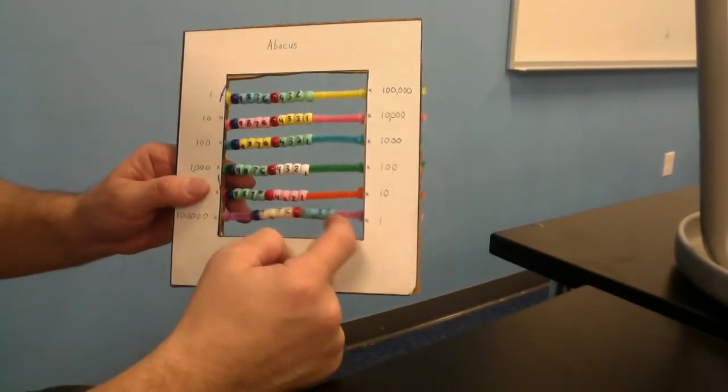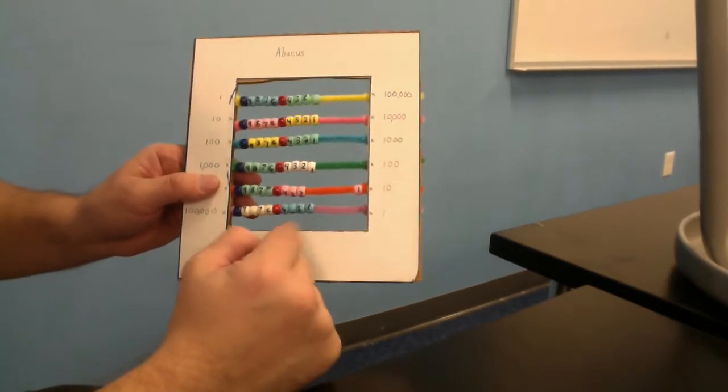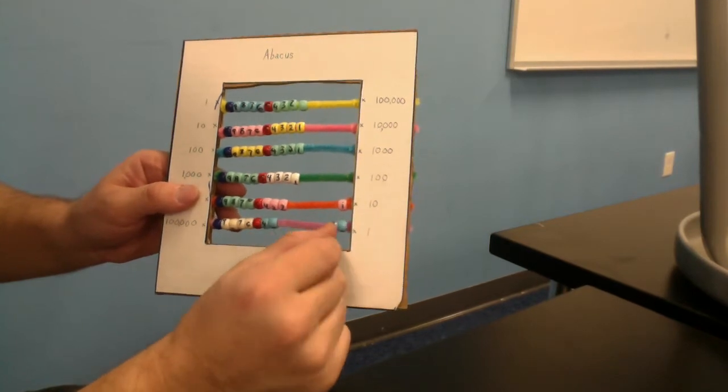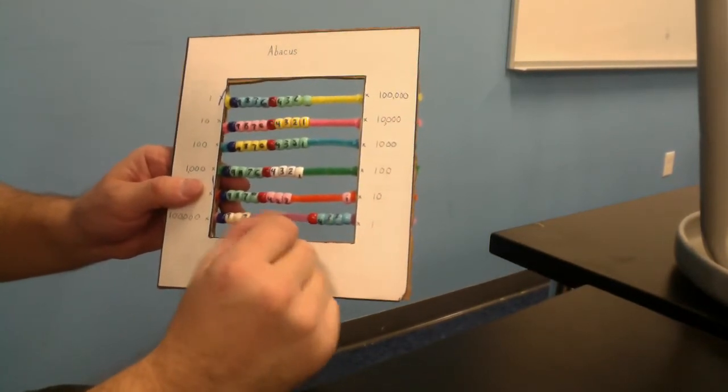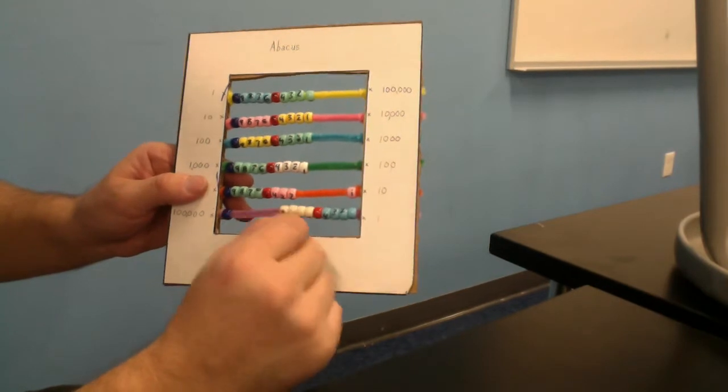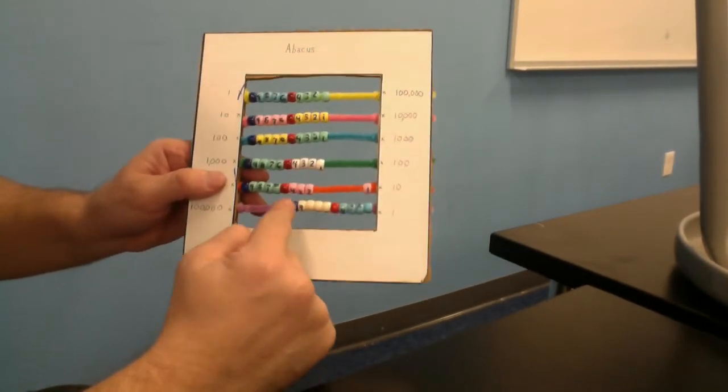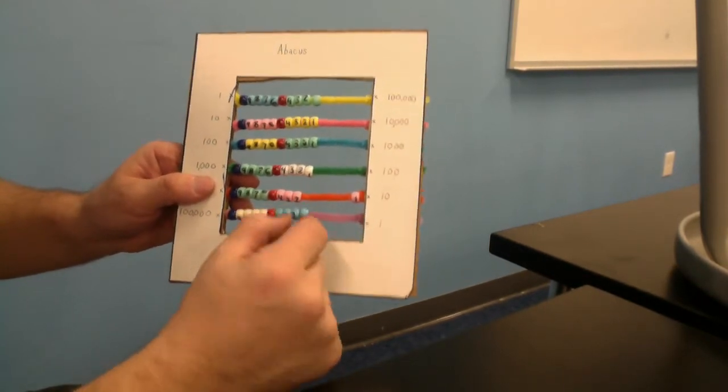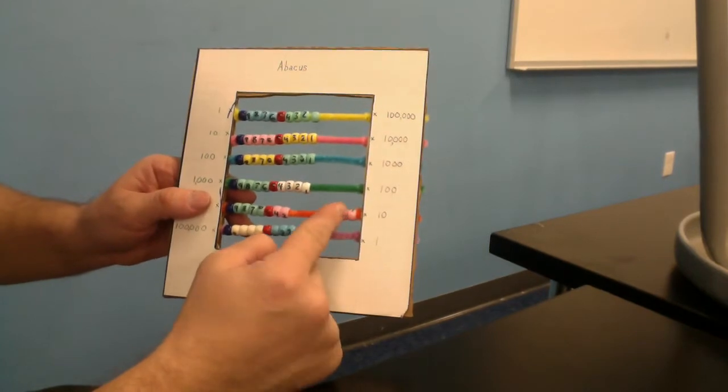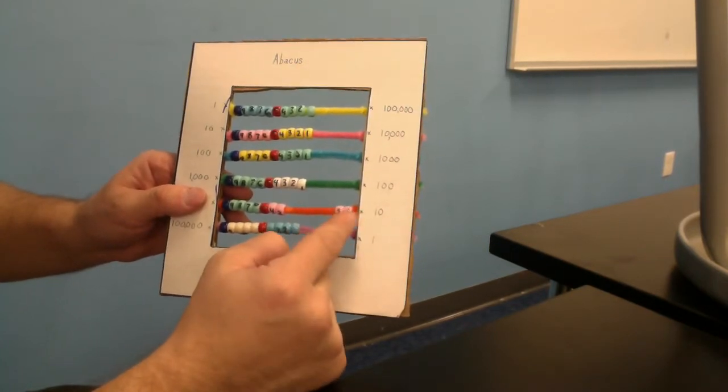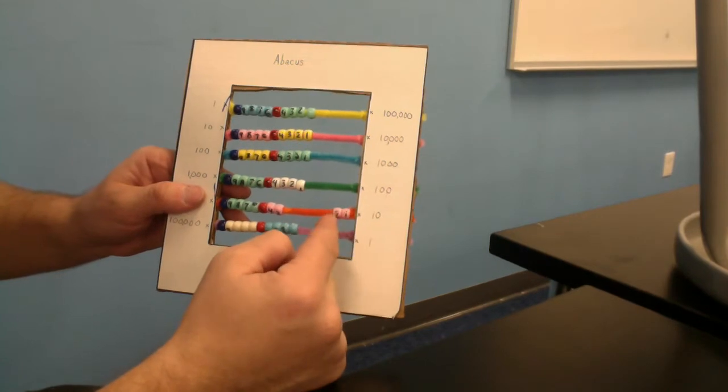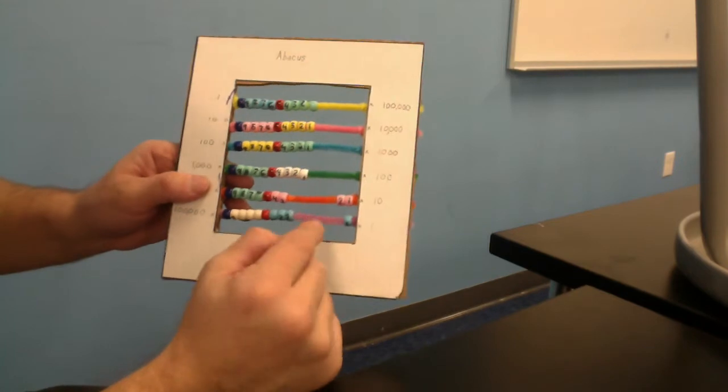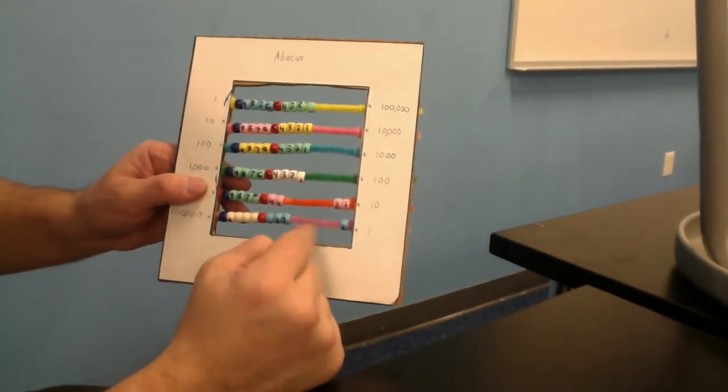So 11 would be 10 plus 1. And we have 12, 13, 14, 15, 16, 17, 18, 19, 20. 10 and 10 make 20. We ran out of beads so we can do the same thing. We move these over, move this, and we're still at 20. We've got 1, 2 in the tens splice. So that's 20. So 2, 20. So 21 would be that. 2 in the tens splice, 1 in the ones splice.